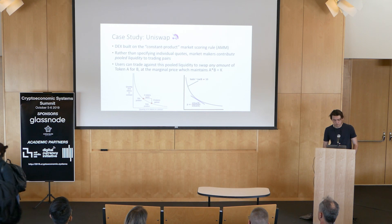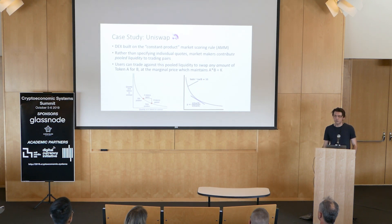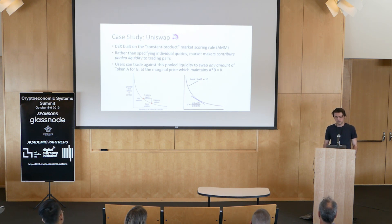So mostly I'm going to be talking about the second issue today, and the case study here is going to be Uniswap. Can I also get a show of hands for how many people have heard of Uniswap? Excellent. Uniswap is a decentralized exchange built on top of the constant product market scoring rule. So rather than there being an order book, people generally contribute liquidity into different pools for different trading pairs. And as a trader, rather than hitting a market maker's quote, you just trade against basically this market scoring rule, which gives a marginal price for any size.